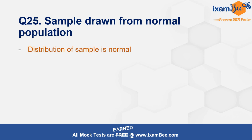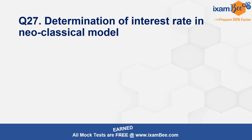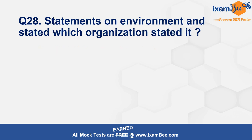A sample drawn from a normal population — how good the distribution of the sample would be — this is a Central Limit Theorem question; the distribution is going to be normal. Then there were statements on MGNREGA provisions: time limits for cash payments, employment allowance if employment is not given, and so on. The determination of interest rate in neoclassical theory is through supply and demand for loanable funds. There was also a question on which organization stated a particular environmental statement — options included UNESCO.